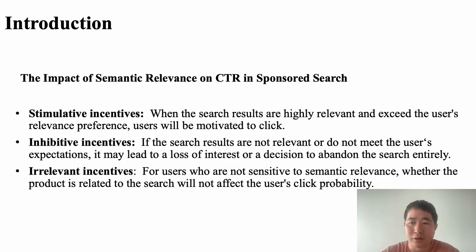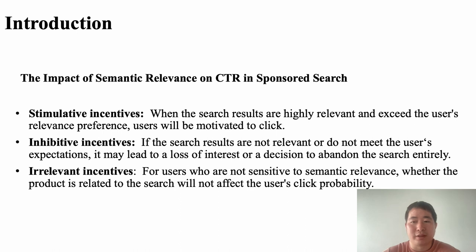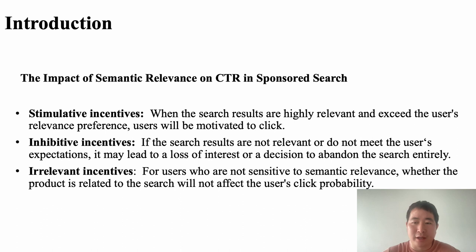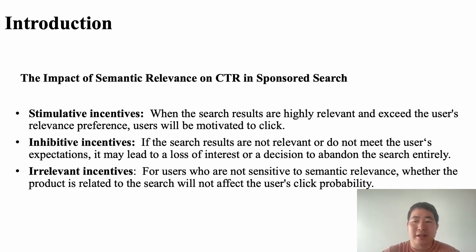In Sponsored Search, the semantic relevance is one of the most important research areas in CTR prediction. Although exciting efforts have demonstrated significant improvement in CTR prediction, we have overlooked the fact that the effect of the semantic relevance on a user click probability is personalized and nuanced. We propose that the search relevance of the same item may generate three types of incentives for different users, such as stimulative, inhibitory, or in-run incentives.